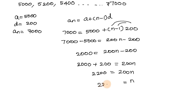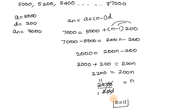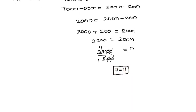2,200 divided by 200: the zeros cancel, giving 22 divided by 2 equals 11. So n equals 11 — meaning in the 11th year from 1995.